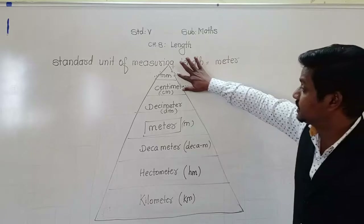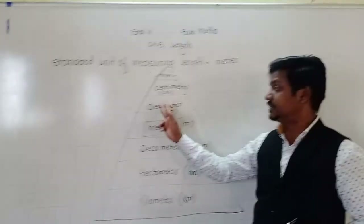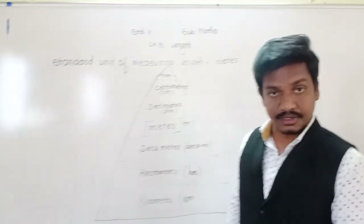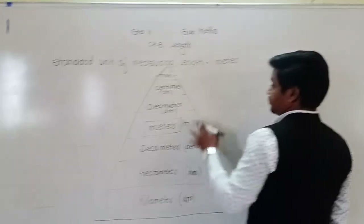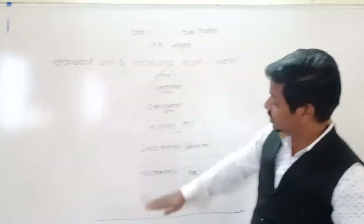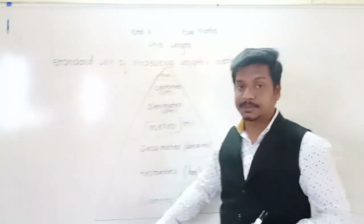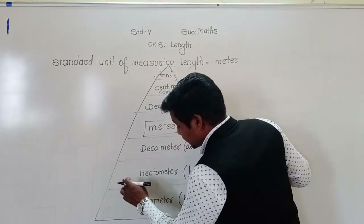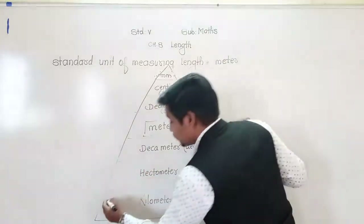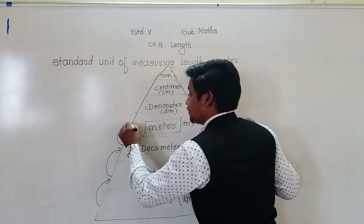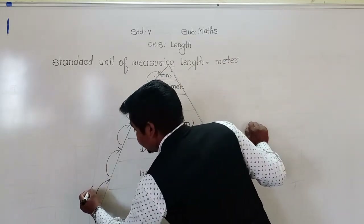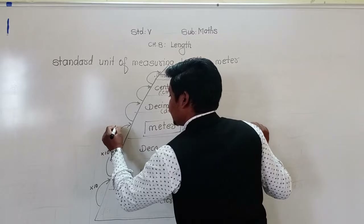How to do these conversions will be learnt using the Conversion Triangle. See the triangle: at the top there is millimetre, then centimetre, then decimetre, then metre, then decametre, then hectometre, and at the bottom is kilometre. As we go up the triangle, the units become smaller; as we come down, the units become bigger. When we have to go up, at each step we multiply by 10.